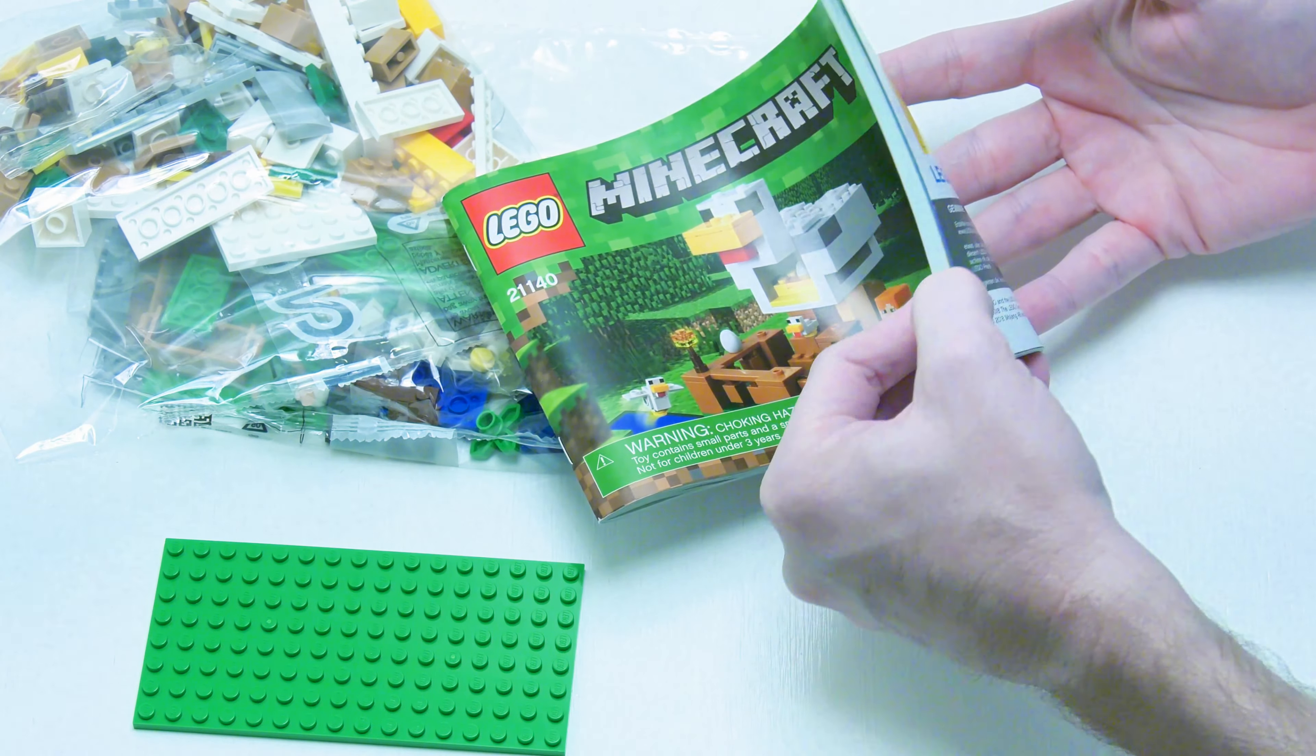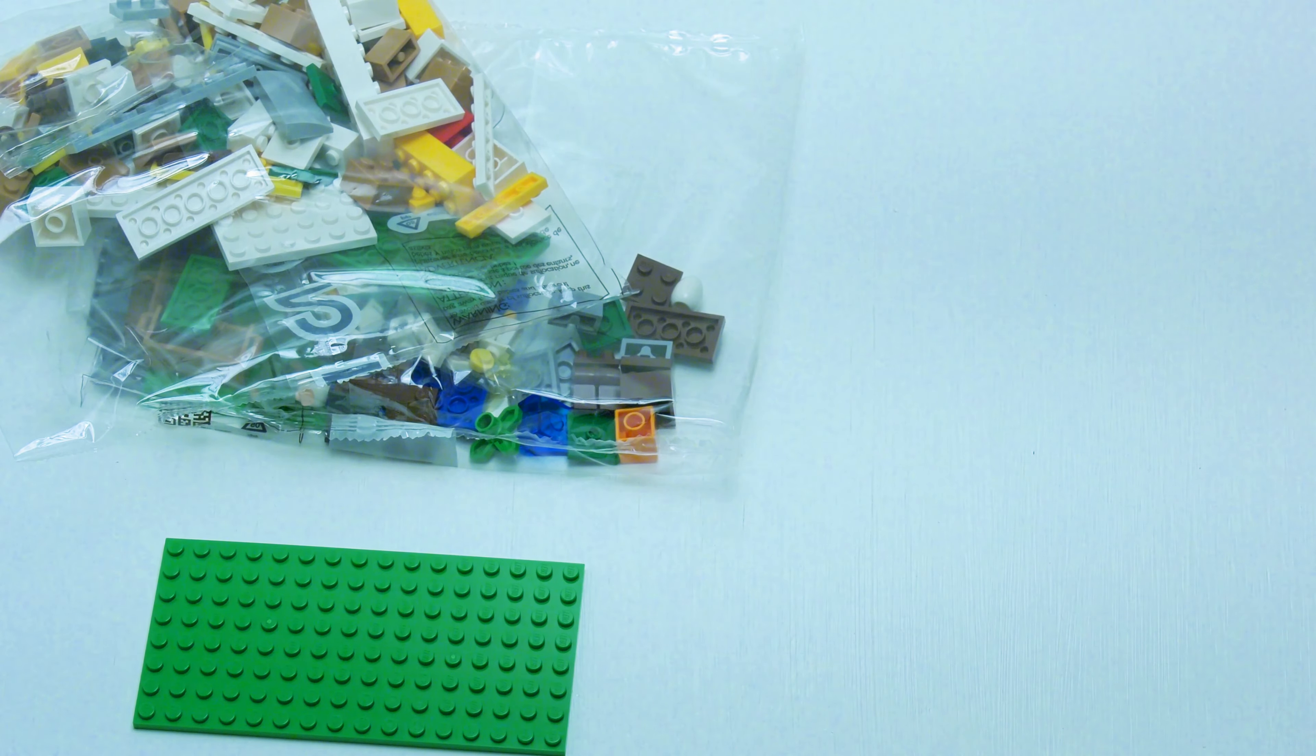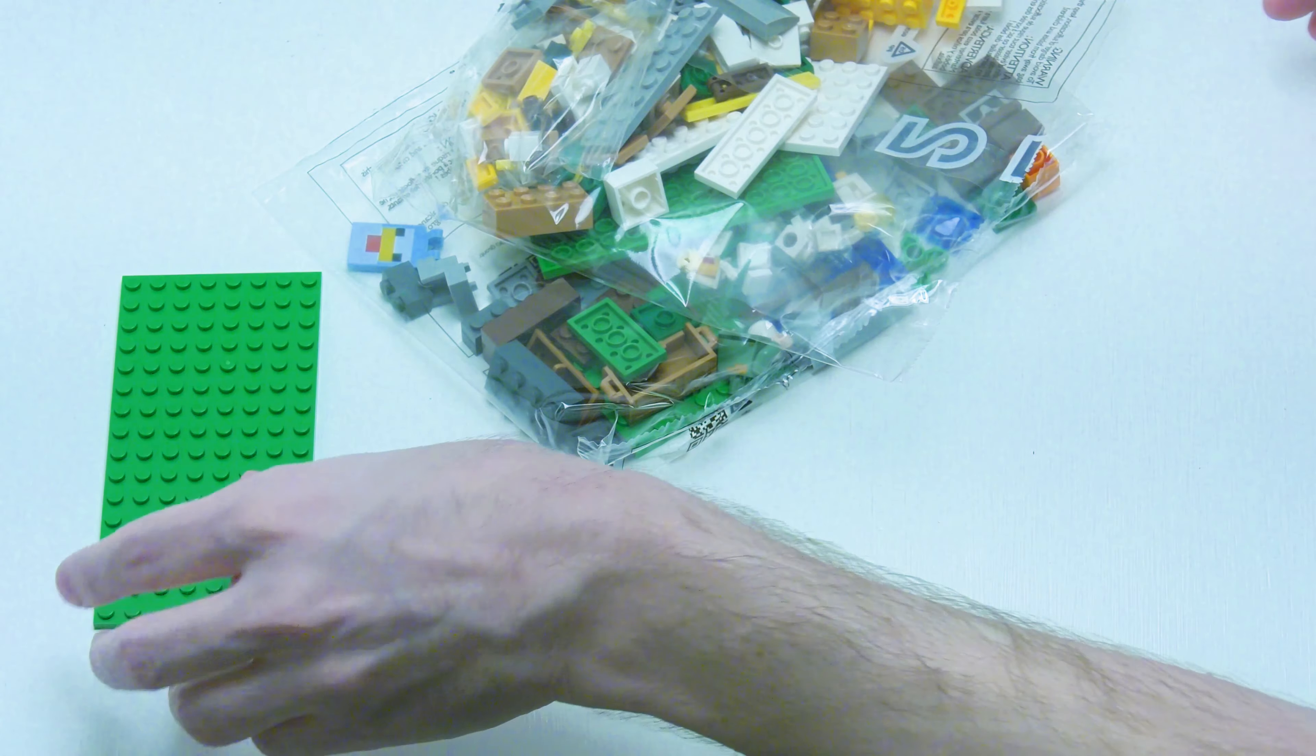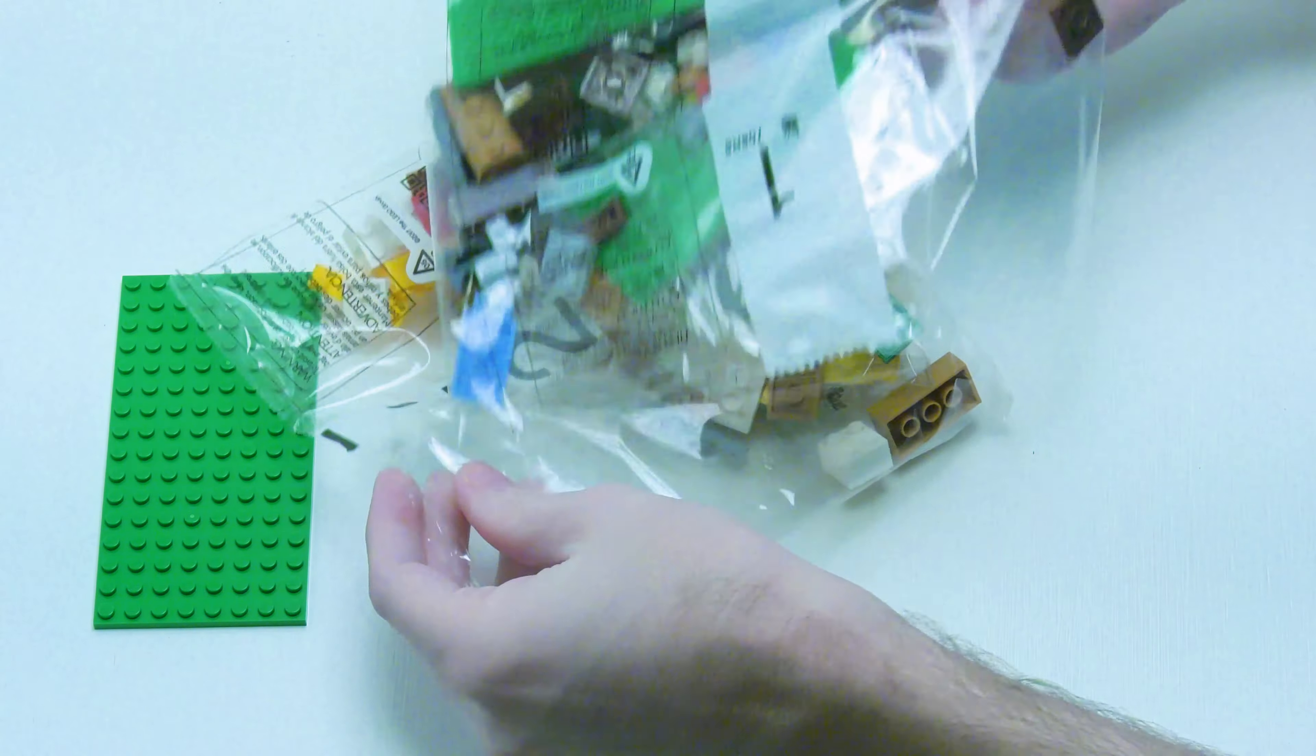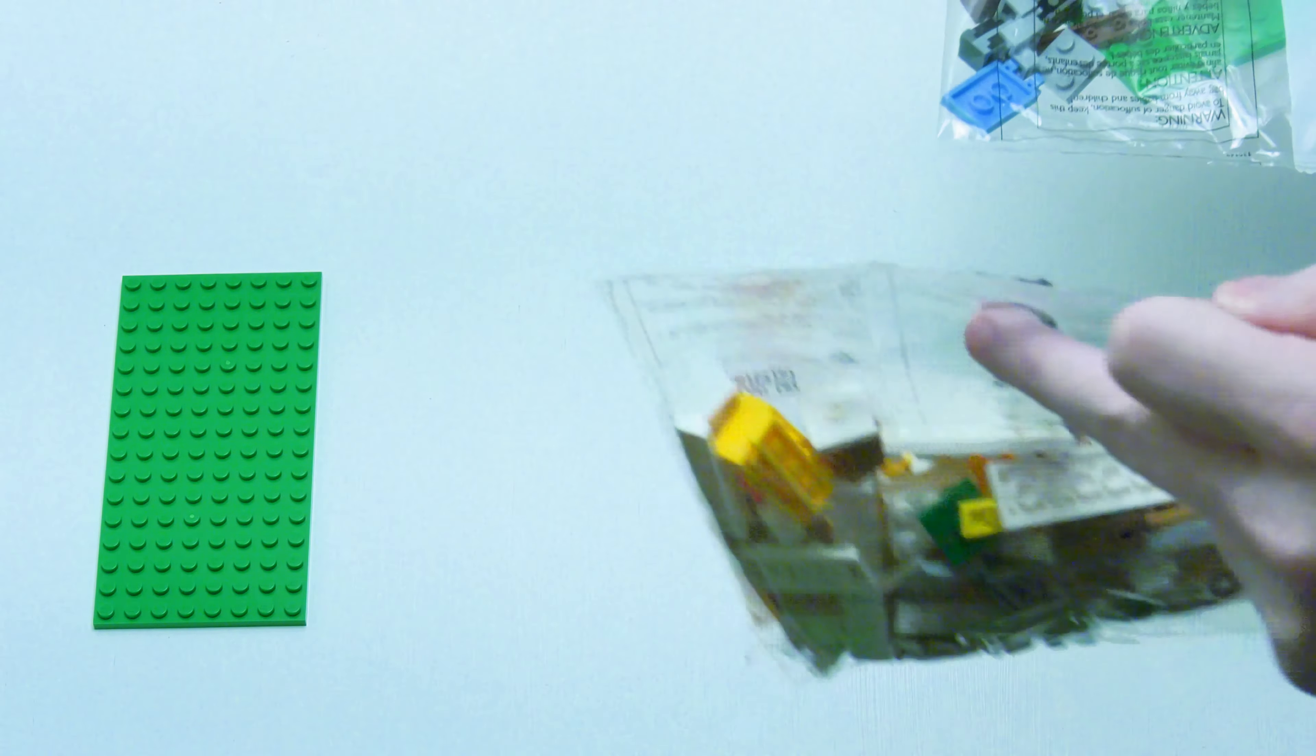Here we have the instruction manual. Looks like we have some bags. We don't care about that really. We got an 8 by 16 plate. Those always come in handy. And two bags. That's what I'm interested in. Let's unbag bag one real quick.